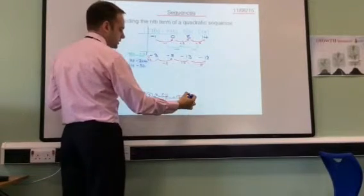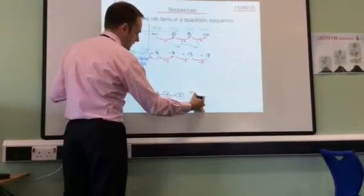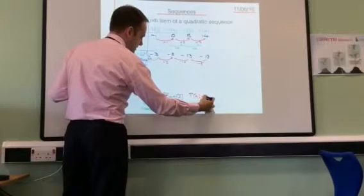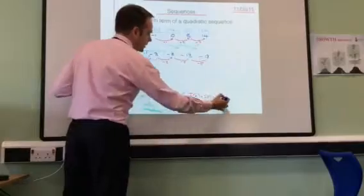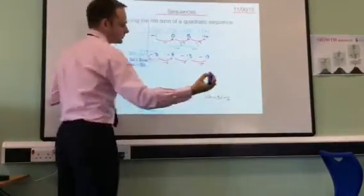So to tidy everything up, our nth term is 2n squared minus 5n plus 2.